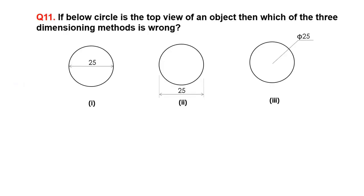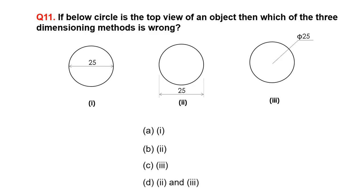If the circle below is the top view of an object, then which of the three dimensioning methods is wrong? A. One, B. Two, C. Three, D. Two and three.